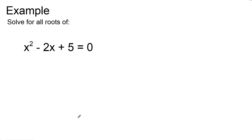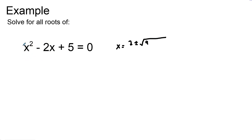Let's solve for all roots of x² − 2x + 5. I'll try to factor it first — factors of 5 are 5 and 1, but 5 + 1 = 6 and −5 − 1 = −6, neither of which is the middle term −2. So I'll use the quadratic formula. Plugging in: x = [−(−2) ± √((−2)² − 4·1·5)] / (2·1) = [2 ± √(4 − 20)] / 2.